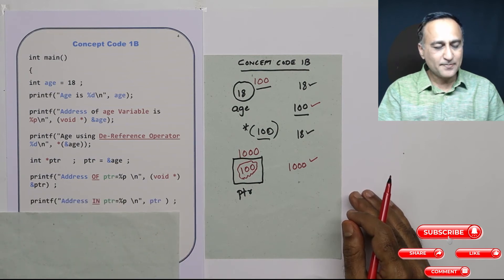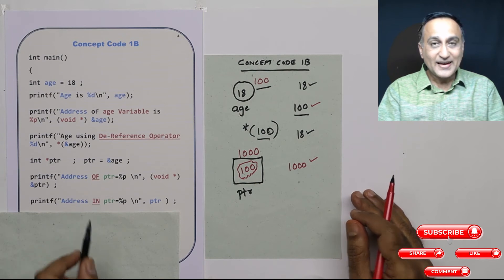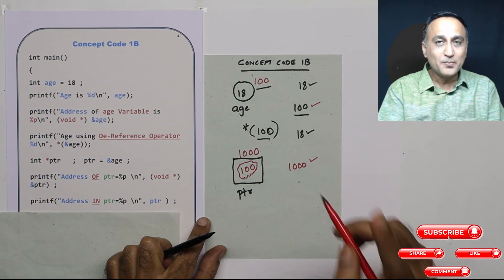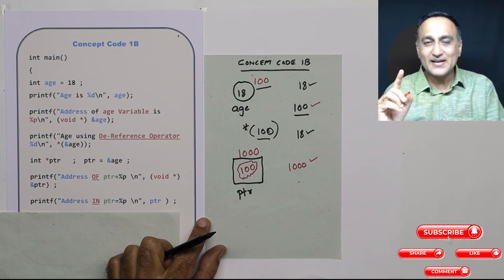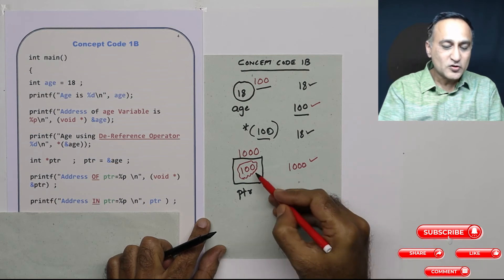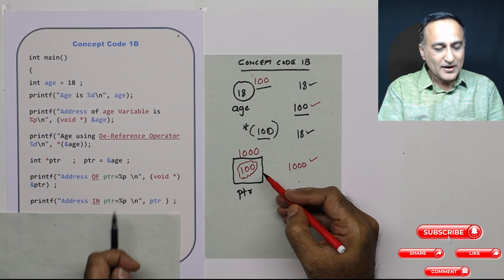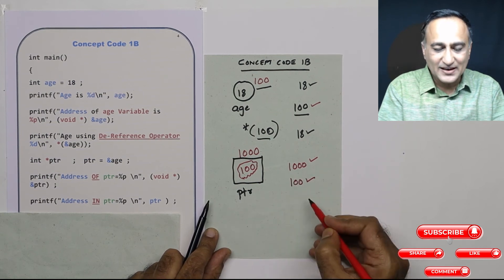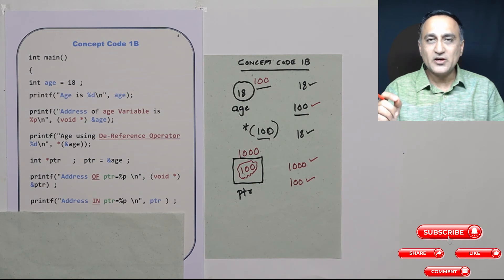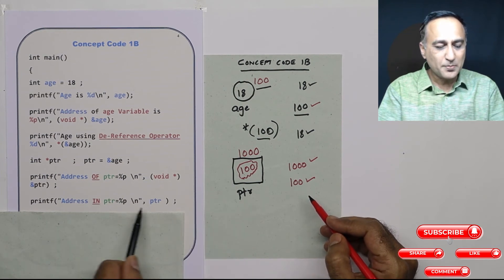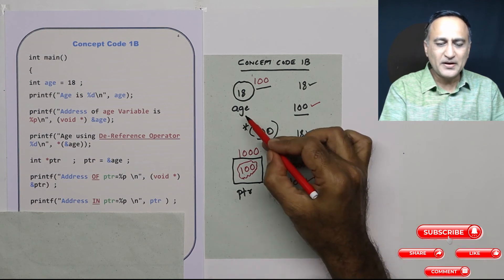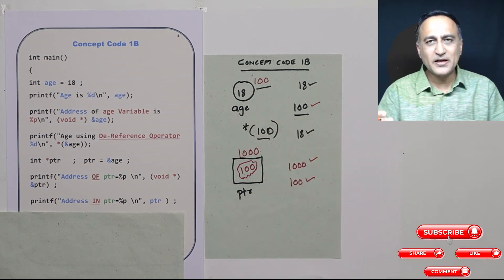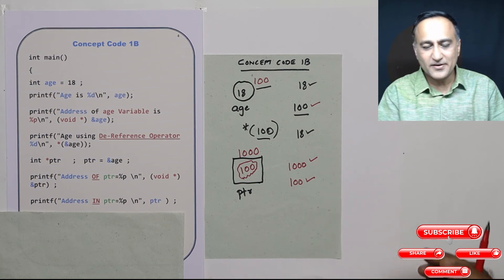Now I am printing the content of `ptr` — the address stored inside `ptr`. `ptr` contains 100. But is 100 a number or an address? 100 is an address. So when I do `printf("%p", ptr)`, it simply prints 100 on the output screen. This is similar to printing `age` giving 18 — printing `ptr` gives 100, except that `ptr` contains an address. So address 100 is printed on the screen.